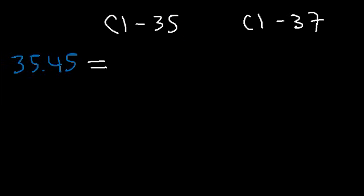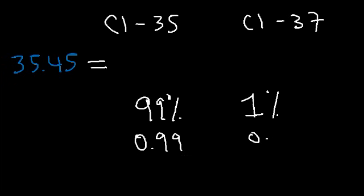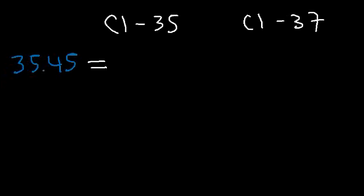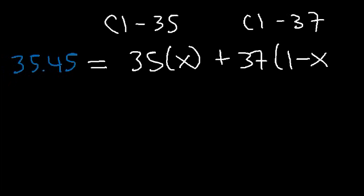To calculate the percentage for each isotope, let x represent the decimal fraction of Cl-35, so 1 minus x represents Cl-37. We set up the equation: 35x plus 37(1 minus x) equals 35.45. Distributing the 37 gives 35x plus 37 minus 37x equals 35.45. Combining like terms: negative 2x plus 37 equals 35.45.